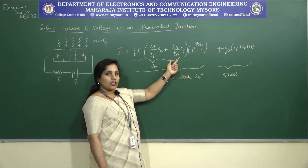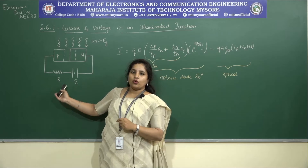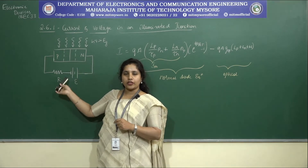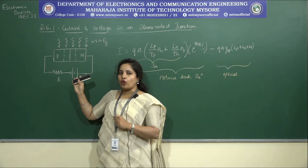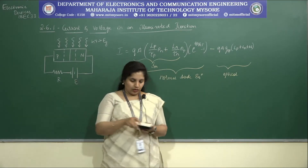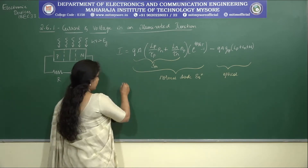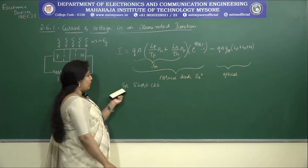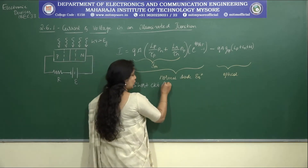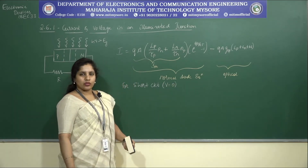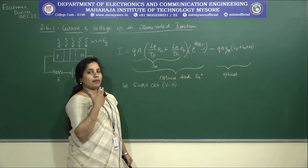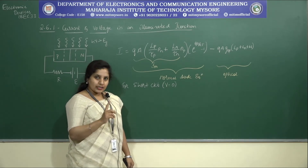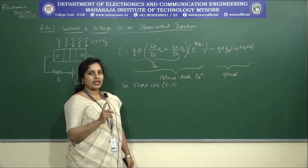Now consider two conditions for this circuit: when the PN junction is open circuited and when it is short circuited. For the short circuit condition, the supply voltage is zero. When the supply is zero, there is no thermally generated drift current because no element is present to generate it.